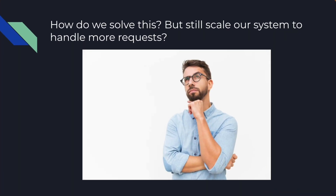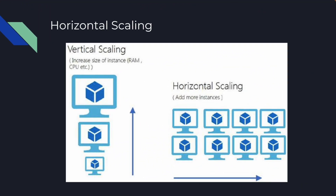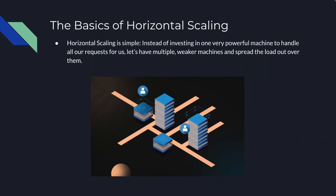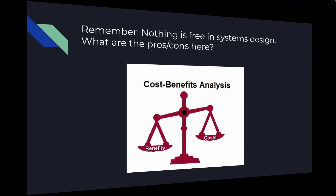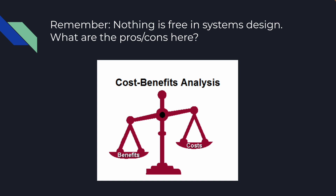So how do we solve this? We still want to scale up our system, so we need some other way. That's where horizontal scaling comes in. The basics of horizontal scaling: instead of investing in one very powerful machine to handle all requests, let's have multiple weaker machines working in a network so we can spread the load out over all of them. But remember, nothing is free in systems design.